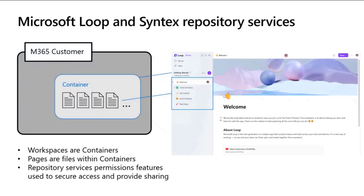Here is the architecture of how Microsoft Loop and Syntex Repository Services work together. Going right to left — on the right-hand side you can see the UX of the Microsoft Loop web application showing the workspace view. This is the getting started workspace that gets stamped out for new users. Under the hood, when a workspace is created within Microsoft Loop, it creates a Syntex Repository Services container. Loop is doing exactly the same API calls through Microsoft Graph to create containers and manage permissions. On the right side in that blue box, it lists the pages within this workspace — those pages are actually just files within that container. Repository Services permissioning features are what Loop uses to secure access and provide sharing.